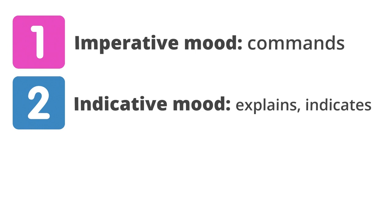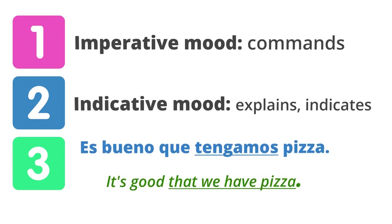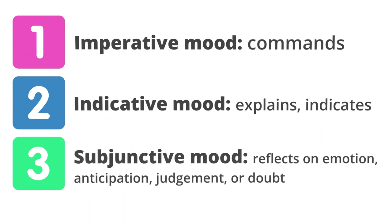So the first category is the imperative mood — giving commands. The second category is the indicative mood, which simply indicates or explains. And finally, if your idea is subjective, or it is a reflection on an emotion, anticipation, or doubt, your verb is going to fall into what we call the subjunctive mood. It's always helpful to try and figure out which of these three moods your idea falls into — is it a command, does it simply describe, or is it reflecting some sort of anticipation, doubt, emotion, or judgment?